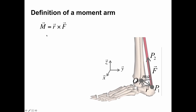Thinking in general, the moment that a muscle would generate about a given point O would be R cross F, where R is the vector pointing from the origin to the point of application of the force P1, crossed with F. This should be something you remember from physics, your statics class, or your biomechanics class. So moment is R cross F. These are all vectors — make note of that.